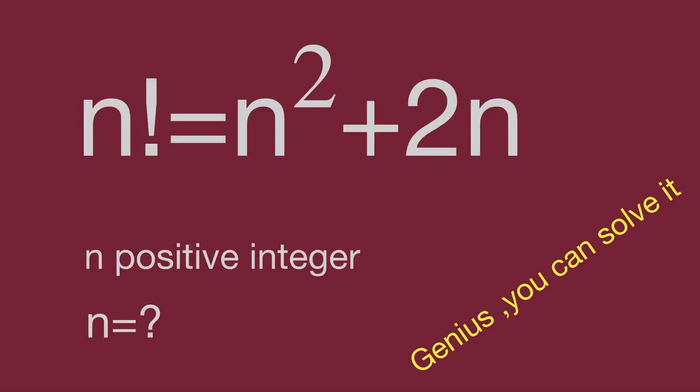Hello, you are watching Balahibo Math Genius Readers. This is an interesting question. For n factorial equal to n squared plus 2n, where n is a positive integer, find the value of n. Would you please try to find the answer if you are interested? Pause the video and give yourself a try. When you are ready, keep watching to find the result.